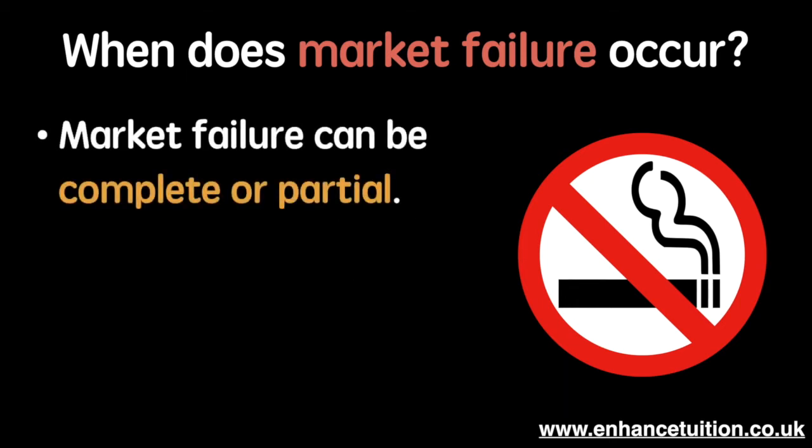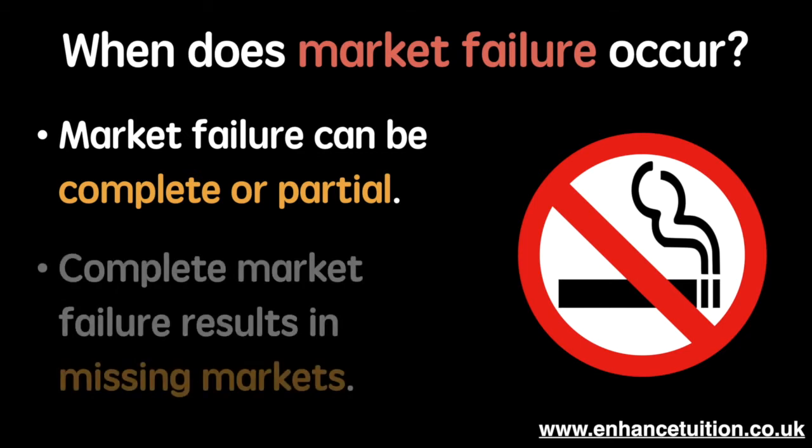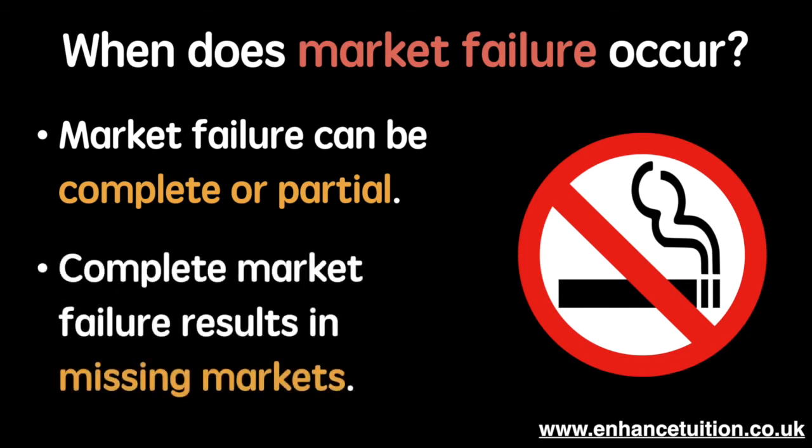It's important to remember that market failure can be complete or partial. Complete market failure results in missing markets, in which no market exists to provide a good. We'll see what a partial market means in the types of market failure. We're going to consider four types of market failure, and by understanding each of these, we will have a clear picture of why markets don't efficiently allocate resources every time and start to consider possible solutions.